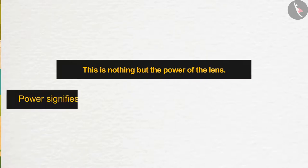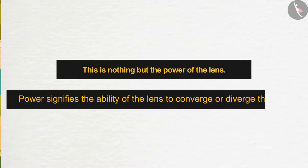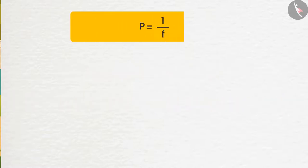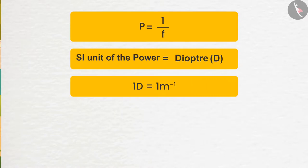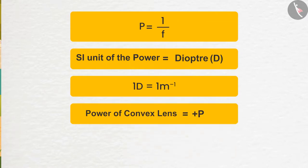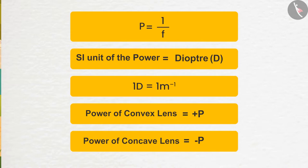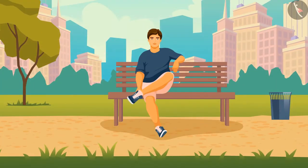This is nothing but the power of the lens. Power signifies the ability of the lens to converge or diverge light. It can be represented mathematically as the reciprocal of the focal length. The SI unit of power is the diopter, denoted by D. 1 D is equal to 1 meter inverse. Since the focal length of a convex lens is positive, its power is also positive. Since the focal length of a concave lens is negative, its power is also negative. This is why the power of eyeglass lenses can be positive or negative, which we will study in detail in the next chapter.